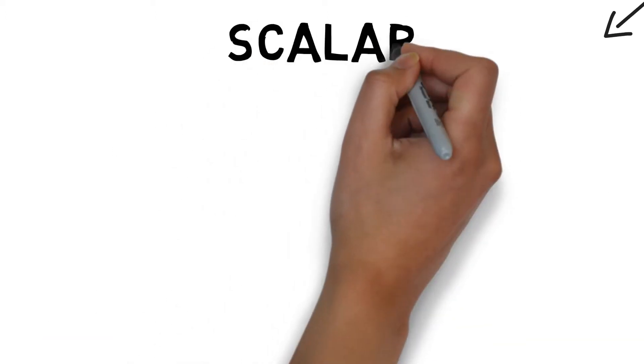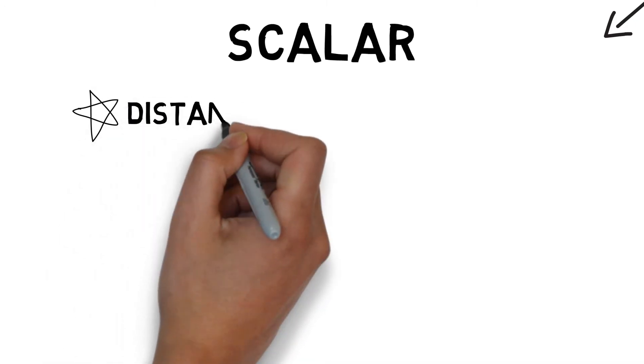Scalar quantities are described by a value only. No direction is included. For example, distance is a single value between two points, such as 100 metres.